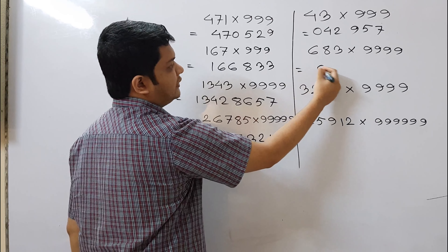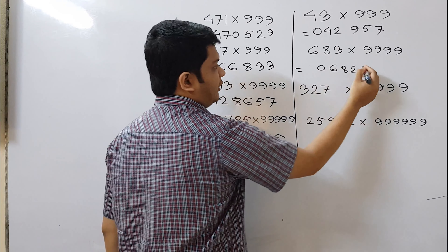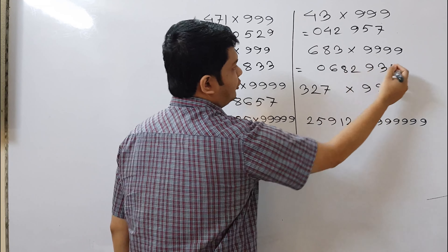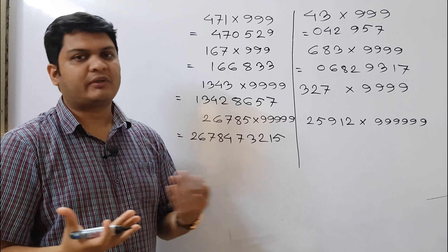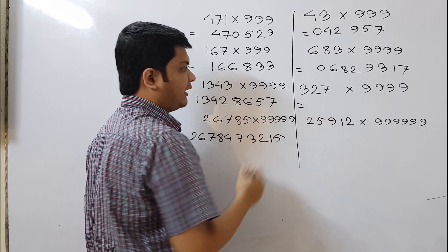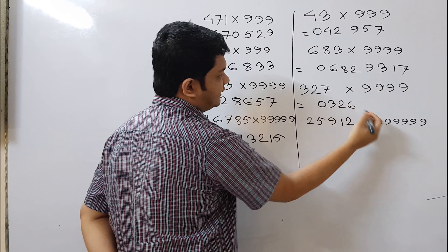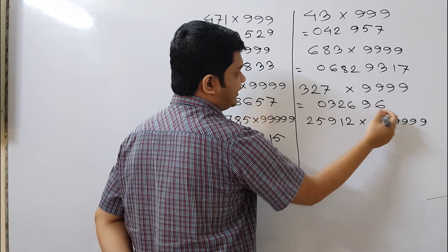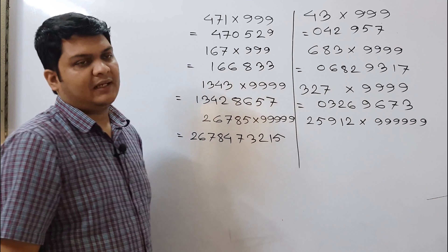For 683 × 9999: treat as 0683, write 0682, then subtract from 9999 — 9 minus 0 is 9, 9 minus 6 is 3, 9 minus 8 is 1, 9 minus 2 is 7. Result: 0682 | 9317. It only takes 2 to 3 seconds to calculate these large products! For 326 × 9999: treat as 0326, write 0325, then subtract — getting 9, 6, 7, 3. Result: 0325 | 9673.